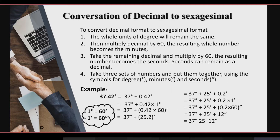Next is the conversion of decimal to the Sexagesimal system. For this, we have some steps. In the first step, the whole units of degree remain the same. The second step: multiply the decimal part by 60 — the resulting whole number becomes the minutes. The third step: take the remaining decimal and multiply by 60 — the resulting number becomes the seconds. Seconds can remain as a decimal.